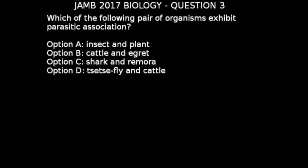Now we're looking at the different options to find the correct answer. For option A, insects and plants, this is an example of mutualism. Mutualism is a form of association where both organisms benefit from each other. In this case, the insect derives both food and shelter from the plant, while the plant is being pollinated by the insect, helping spread the plant's growth and spread.